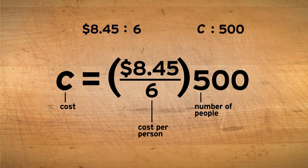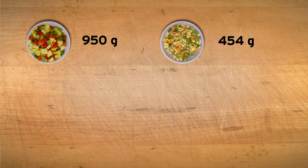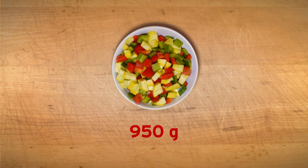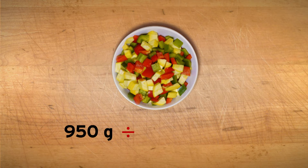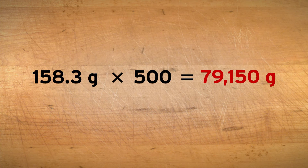Serving fresh vegetables to 500 people would cost about $704. Now let's look at the cost of the frozen vegetables. The frozen vegetables come in bags of 454 grams each — that's only about half of what we needed for six people, so we want to calculate this more precisely. Let's start by finding how many grams are in a single serving. If we divide the amount of vegetables in the original recipe by the number of people it serves, we get about 158.3 grams of vegetables per person. We need enough vegetables for 500 people, so let's multiply that number by 500. That's 79,150 grams.